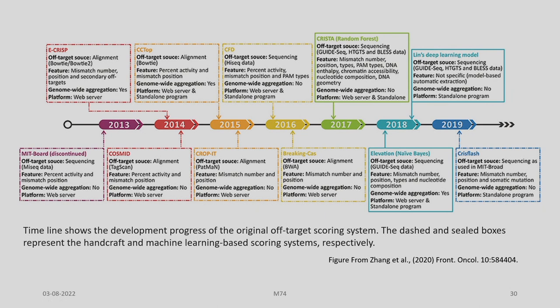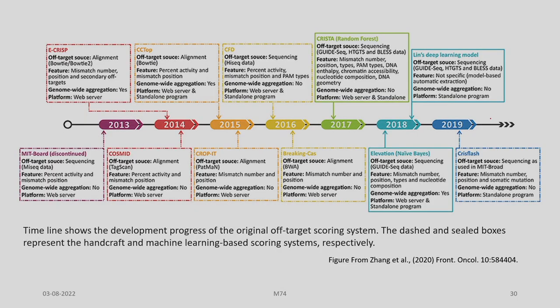The whole idea of presenting the development of these various tools over time is to show the diversity and continuous effort by researchers. You have so many tools continuously being developed over the years — 2013, 2014, 2015, 2016, 2017, 2018, 2019 — and the latest shown in this figure is CRISPRflash.